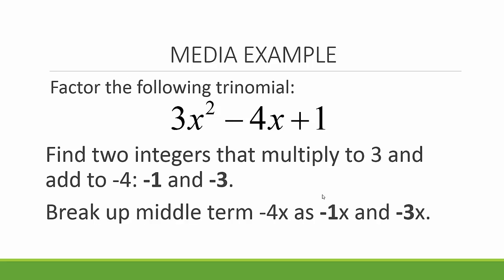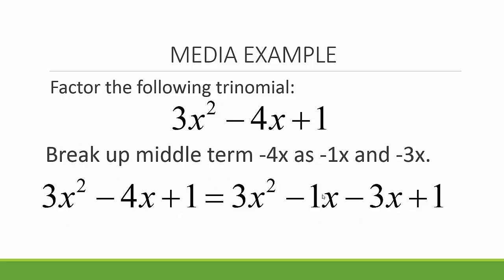Next we want to break up the middle term negative 4x as negative 1x and negative 3x. So we get 3x squared minus 4x plus 1 equals 3x squared minus 1x minus 3x plus 1.